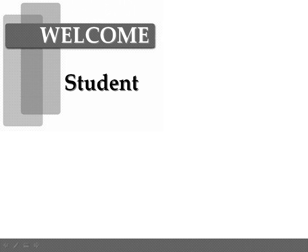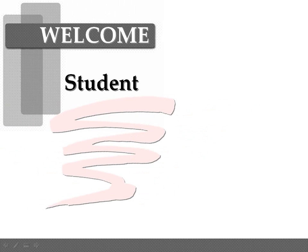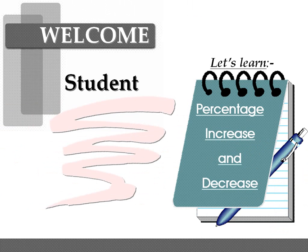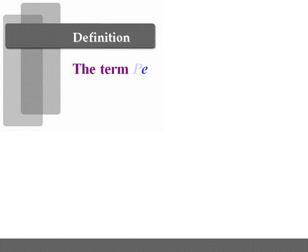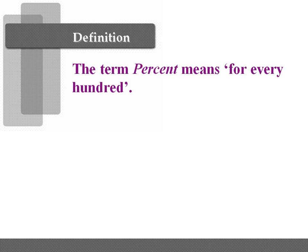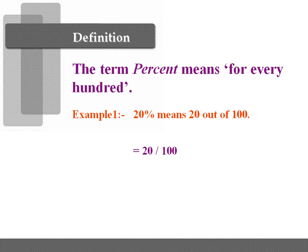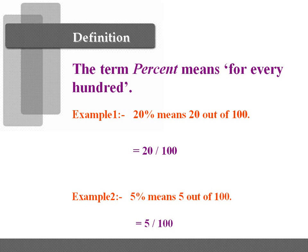Welcome, students. Today we are going to learn one of the topics of number sense: percentage increase and decrease. Let's learn the definition of percent. The term percent means 'for every hundred.' For example, 20% means 20 out of 100; in fraction form, we write it as 20 over 100. Similarly, 5% means 5 out of 100, written as 5 over 100.